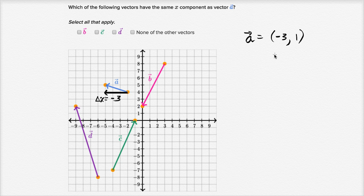But we just care about our x component. So let's think about what other vectors here have an x component of negative three, that if we start at our initial point and go to the terminal point, our x value has gone down by three.